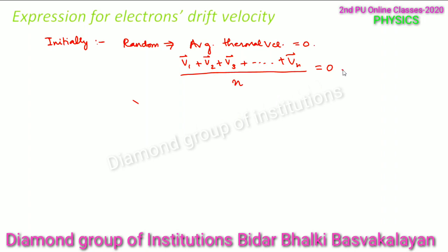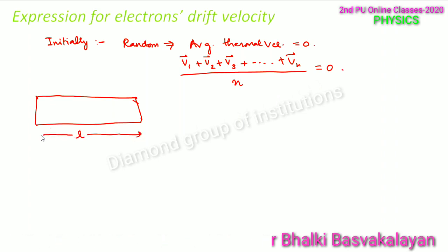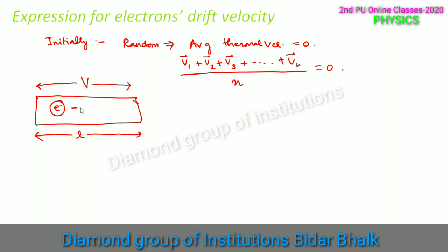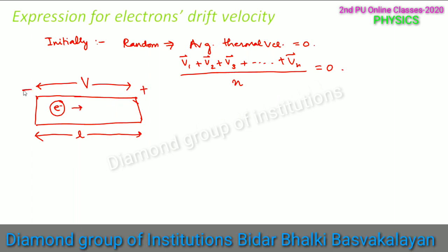Now let us suppose that we apply an external electric field E. This is my conductor of length l, and a potential difference V exists between its ends. This is my electron. The electron starts moving towards the positive end because this end is positive and this is negative. So V represents the potential difference between the ends of the conductor.